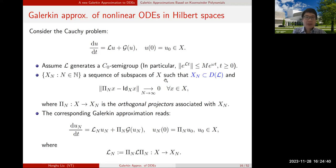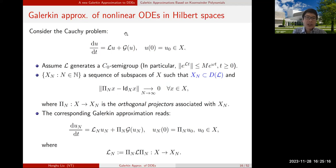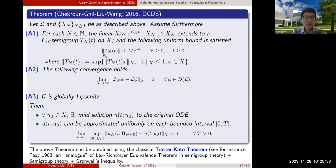We have a sequence of subspaces of X whose size increases to infinity, with the projection Π_n onto the subspaces converging to the identity pointwise for all x — meaning the subspaces span the whole space X as n → ∞. We project the original problem onto these subspaces to get Galerkin approximations, where u_n is the projection of u onto X_n, yielding finite-dimensional ODE systems.